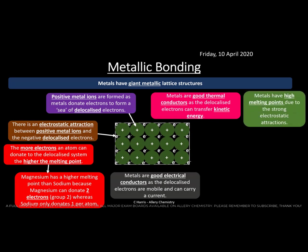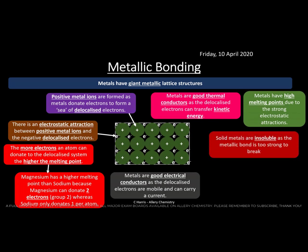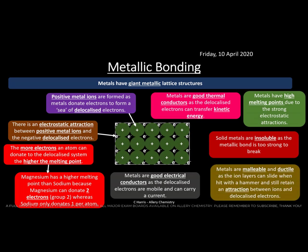Metals have high melting points due to the electrostatic attractions between positive ions and the sea of electrons. Solid metals are insoluble because the bonds are too strong — water isn't powerful enough to break open a metallic structure. Metals are malleable and ductile — meaning they can be hammered into shape or drawn into wires. This is because the positive ions can slide over each other while the delocalized electrons maintain the integrity of the bond, so hammering a metal dents it rather than shattering it.